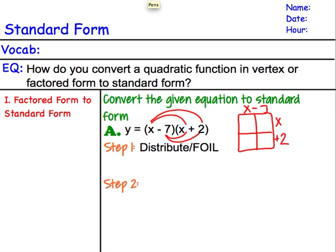So if we go ahead and FOIL this out, x times x is x squared, and then x times 2 is plus 2x. Negative 7 times x is minus 7x, and negative 7 times 2 is negative 14.